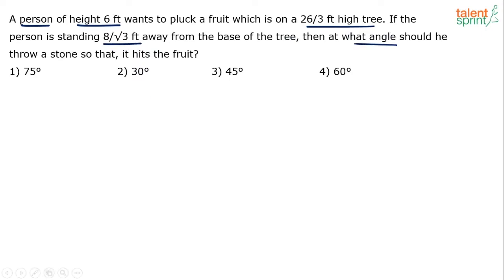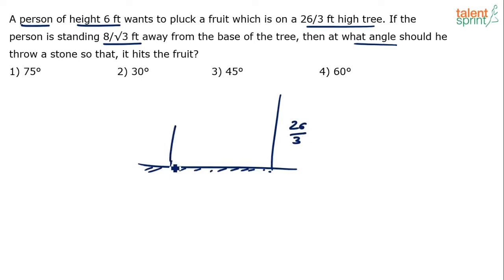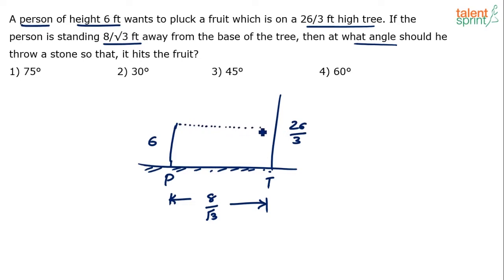There's an underlying assumption here — strictly speaking, the answer cannot be determined without some basic assumptions. Let's say this is the ground level, here's the tree at height 26/3, and here's the person at height 6 feet. The distance between them is 8/√3 feet. This line represents the angle of elevation — the direction in which he throws the stone.